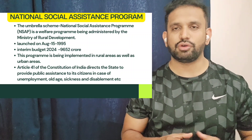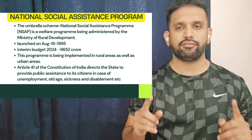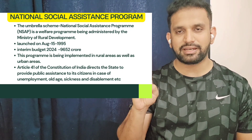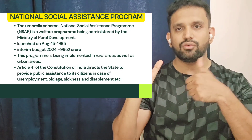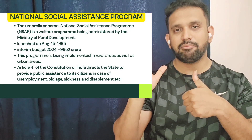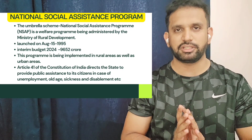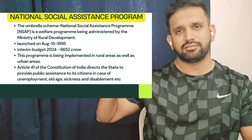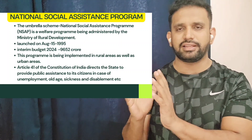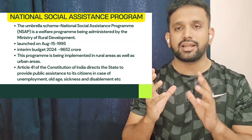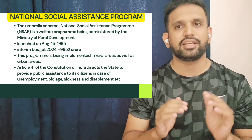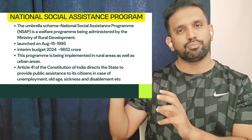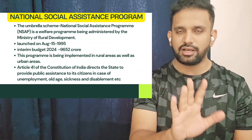Now let us learn about the important features of these schemes. We have six sub-schemes: National Old Age Pension Scheme, National Family Benefit Scheme, National Maternity Benefit Scheme, Annapurna, Disabled, and Widow pension schemes. However, the National Maternity Benefit Scheme has been removed from NSAP. That particular woman-related benefit is now taken care of by a new dedicated scheme — the Indira Gandhi Matritva Sahyog Yojana, launched in October 2010. All other five schemes remain intact.